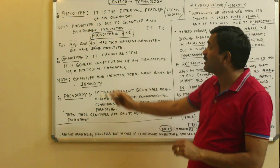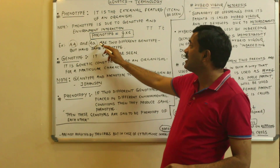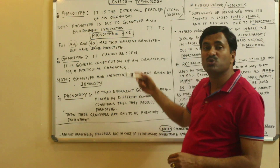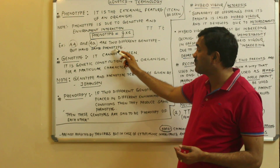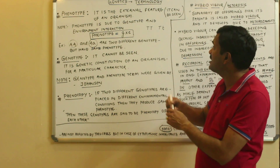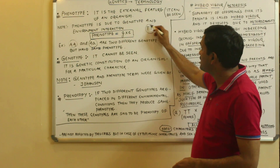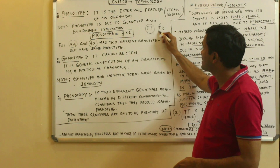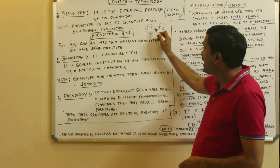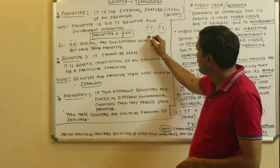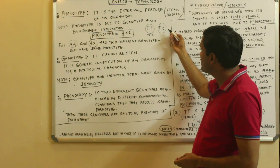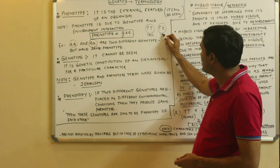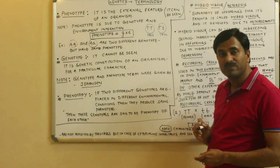Say capital A capital A and capital A small a are two different genotypes, but they have the same phenotype. Practically, consider capital T capital T and small t small t — though they have different genotypes, they have the same phenotype, both described as tall.